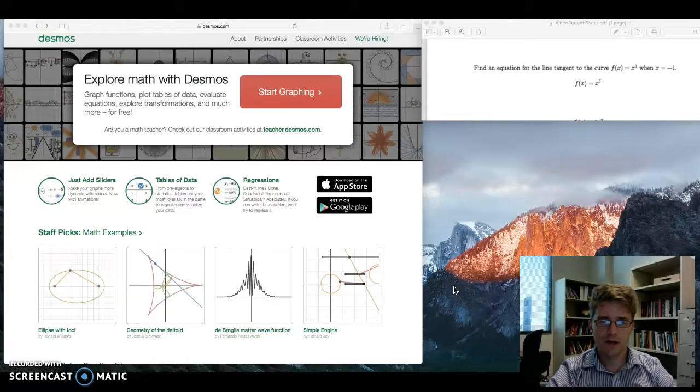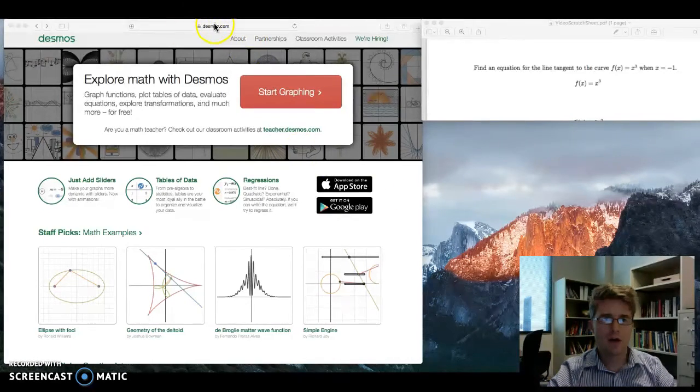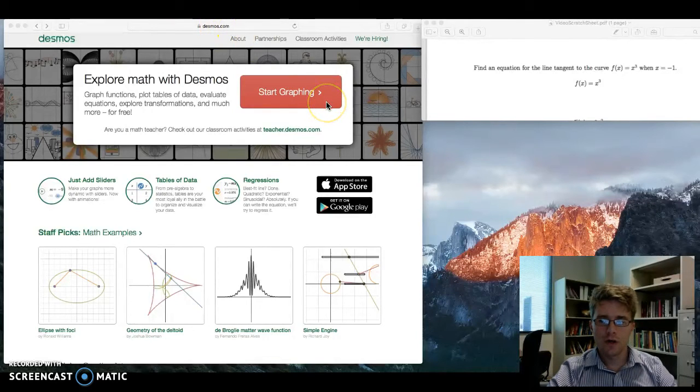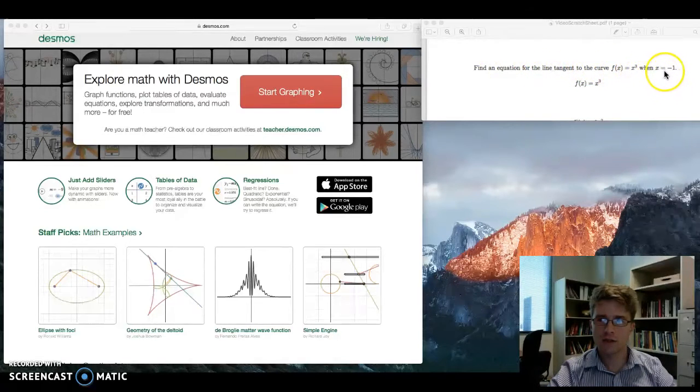Hi there, this is Asa Scherer. Today I'm going to be talking about how to use an online graphing program called Desmos.com to graph a function curve along with its tangent line at a specific point. This is some Calculus 1 material here. So we're going to start with the question: find an equation for the line tangent to the curve f of x equals x cubed when x equals negative 1.